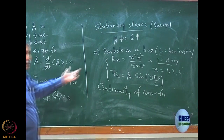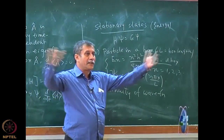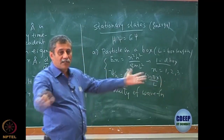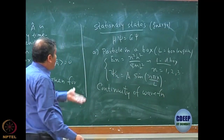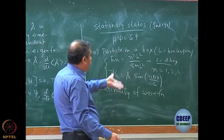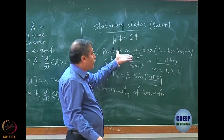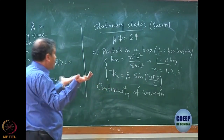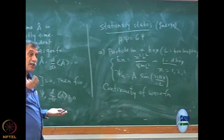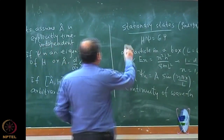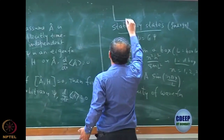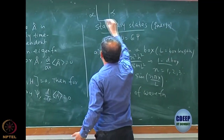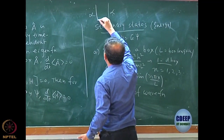The potential was infinity outside the box and 0 inside. If the potential inside is not 0 but some finite constant, it does not matter much — there will only be a scaling. You can easily calculate as long as it is a constant value. If it is not constant, that could be an interesting problem.